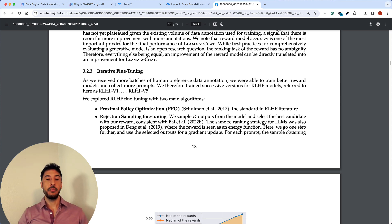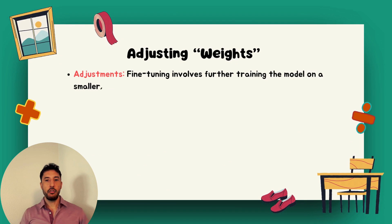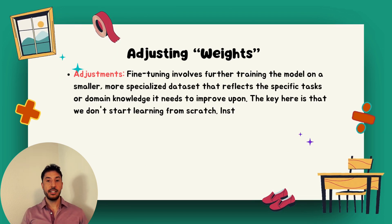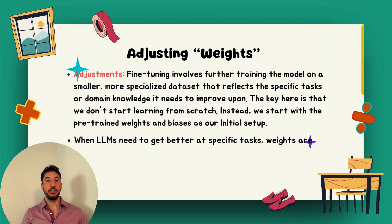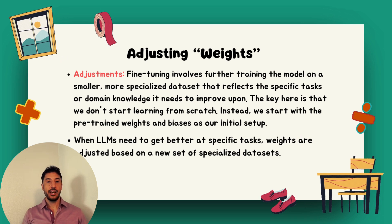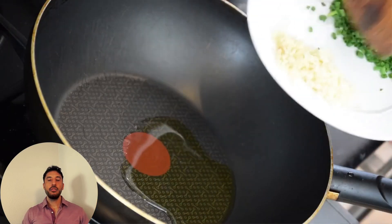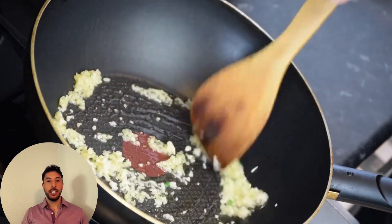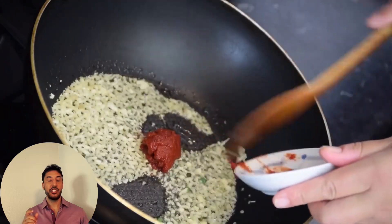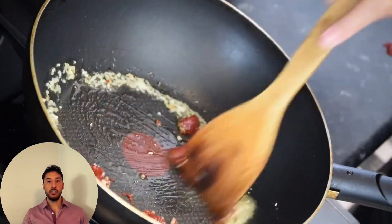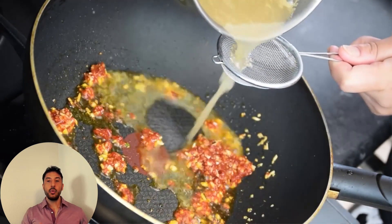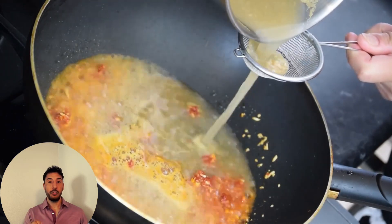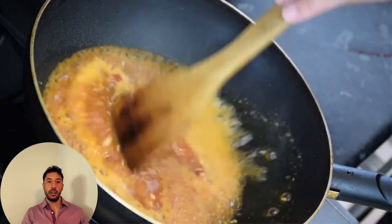Now let's dive deeper into how fine-tuning works at the neural network level. Fine-tuning involves further training the model on a small, specialized dataset. The key is that we don't start learning from scratch — instead, we start with the pre-training weights and biases. Think of weights like the recipe recommendations for how much of each ingredient to use: just as adding the right amount of salt or pepper makes a big difference in how food tastes, weights determine how much importance a piece of information should have on the outcome.